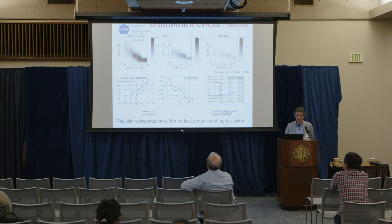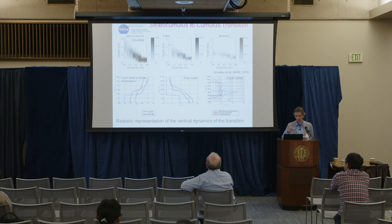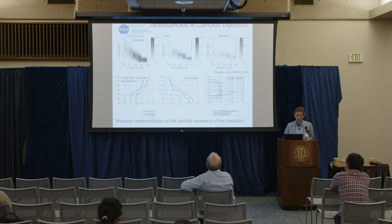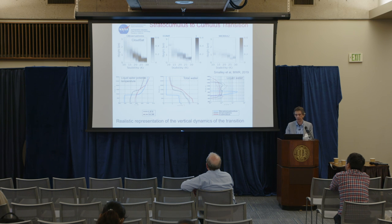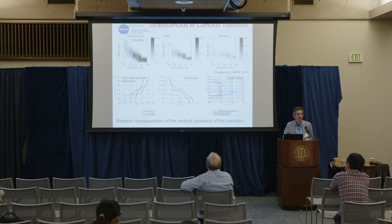Looking at the profiles of liquid water potential temperature, total water, and liquid water for three cases along the transition — a stratocumulus case in blue, a transition case, and a cumulus case — the single column model with multiple plume mass flux plus eddy diffusivity is very close to LES results, even going from a well-mixed boundary layer to a conditionally unstable shallow convection boundary layer. It represents not only the clouds well but also the vertical thermodynamic properties really well.